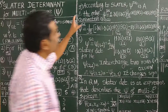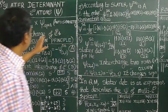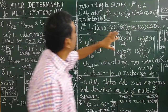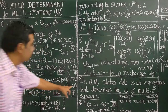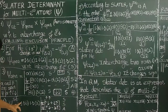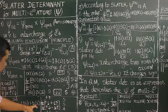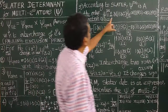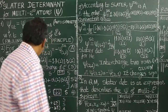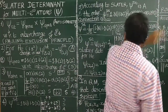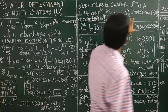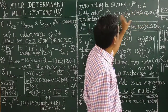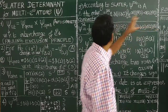According to Slater, the total wave function is anti-symmetric with respect to interchange. Therefore, the only allowed combination is the anti-symmetric one. The total wave function psi(1,2) is the spatial wave function 1s(1)·1s(2) multiplied by (1/√2)[α(1)β(2) − α(2)β(1)]. This wave function equation can be represented in the form of a determinant.